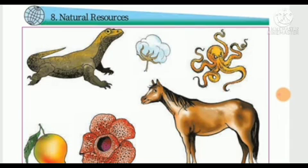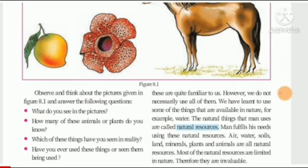Children, observe this picture carefully. Based on this, there are some questions in your textbook which we are going to answer. The first question is: what do you see in the pictures? In this picture, there are some animals, fruits and flowers, and agricultural products. How many of these animals or plants do you know? You must not be knowing some of the animals, plants, or flowers in it. Which of these things have you seen in reality? You might not have seen some of these flowers or animals in reality. Have you ever used these things or seen them being used? So, we come to know from these questions that in nature there are many things which we don't even know.